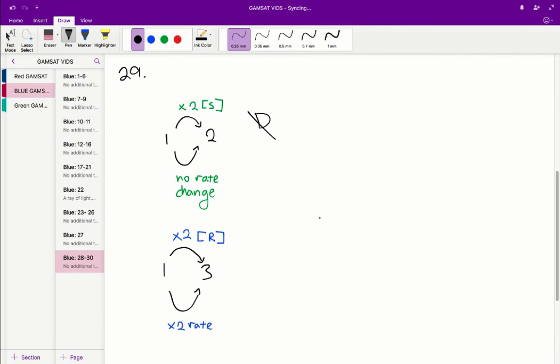As for 1 and 3, well 1 and 3 you'll find will rule in the answer A because when we double the amount of R that we have, our rate doubles, right?